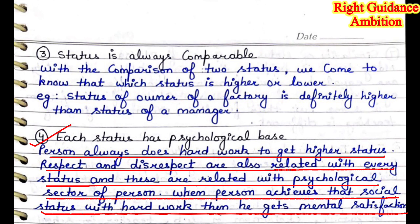Fourth point: each status has a psychological base. A person always does hard work to get a higher status. In society, every person wants to improve their status. Higher status can be achieved in society, which means every person is working toward it. Respect and disrespect are also related with every status. We respect the same status according to our society, and these feelings are related with the psychological sector of a person. Every status is related to our mind. When a person achieves a social status with hard work, they get mental satisfaction and feel confident. Like, if someone becomes an IAS or IPS officer, they get admiration in society, and others also give respect to that person.